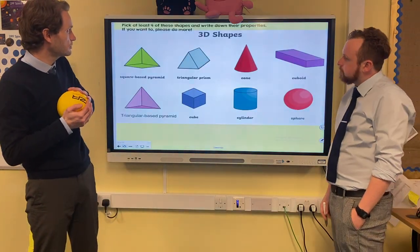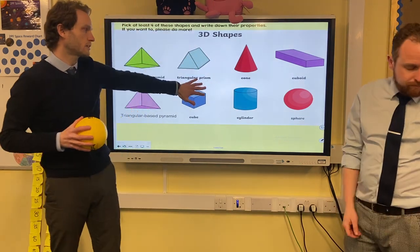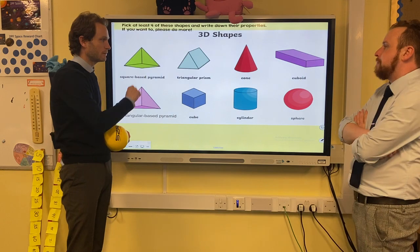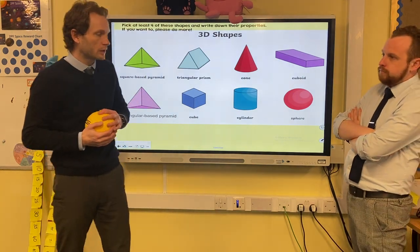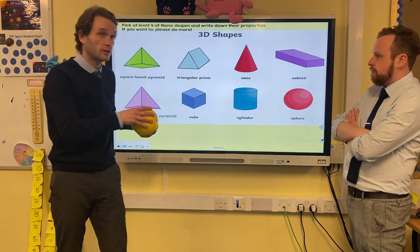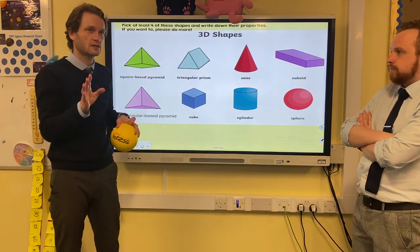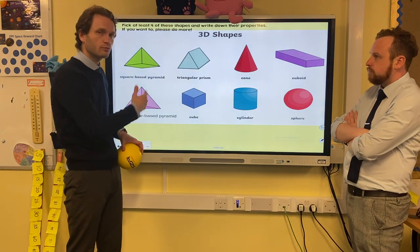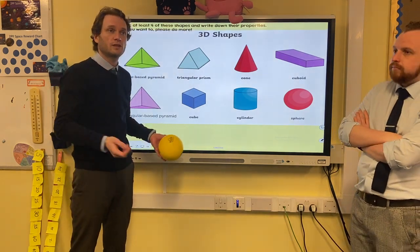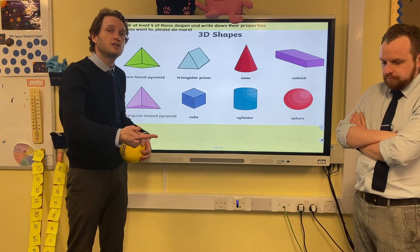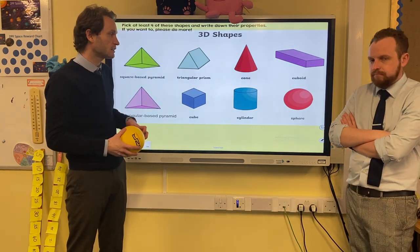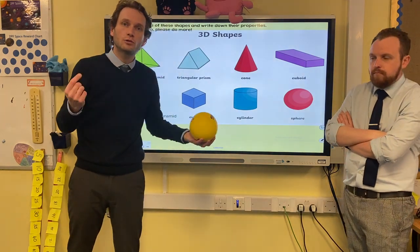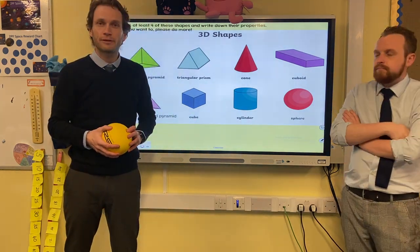For today's activity, you'll have a resource pack with pictures and names of shapes. You can try to draw the shape or just write its name, then write down the properties: the faces, the edges, and the vertices. I'd like you to do at least four shapes, and you can do more if you like.